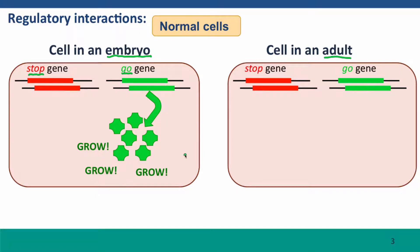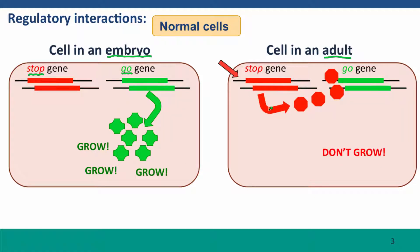However, the same genes in an adult cell behave differently. In adult cells, the stop gene is active, and it produces a protein product that acts as a transcription factor regulating the go gene — in particular, it turns the go gene off. So the go gene is not transcribed in adult cells. Indirectly, the stop gene tells adult cells not to grow.